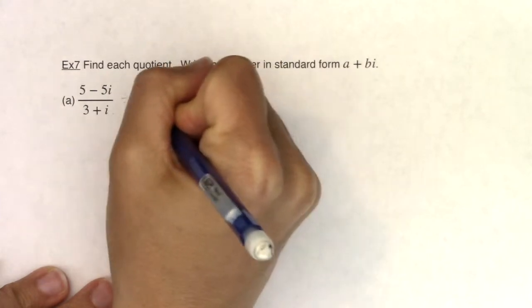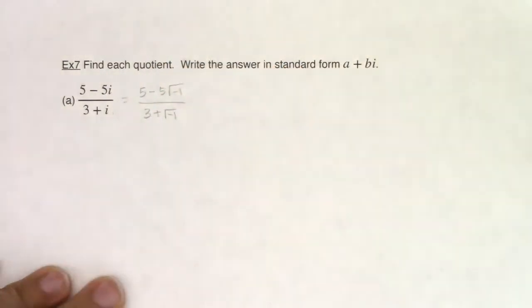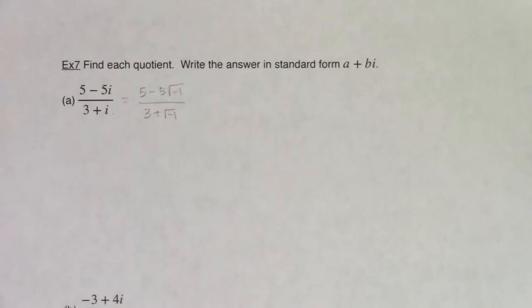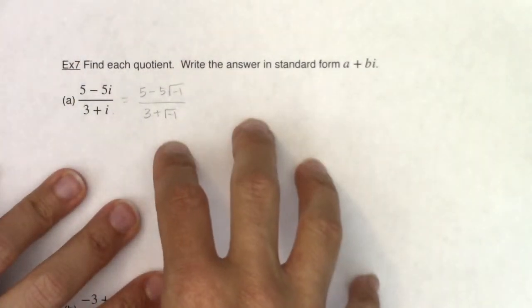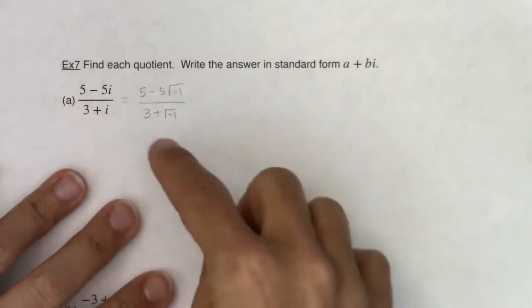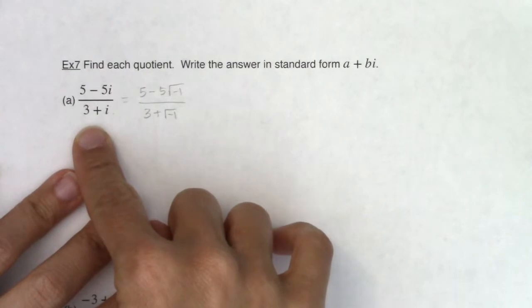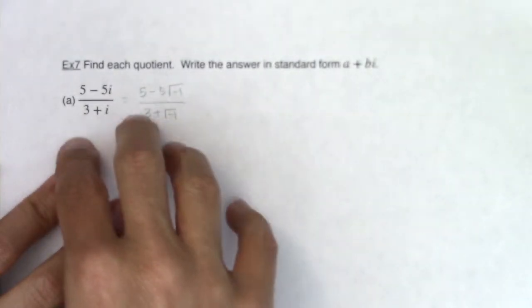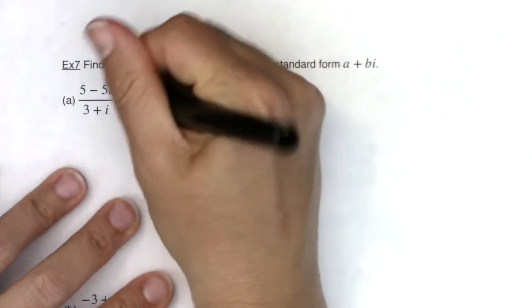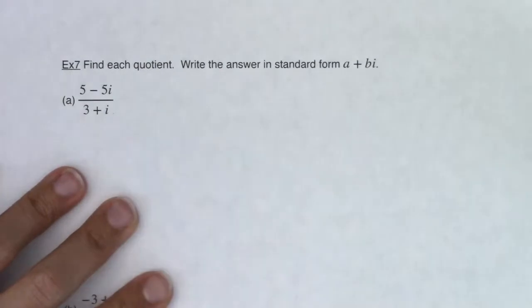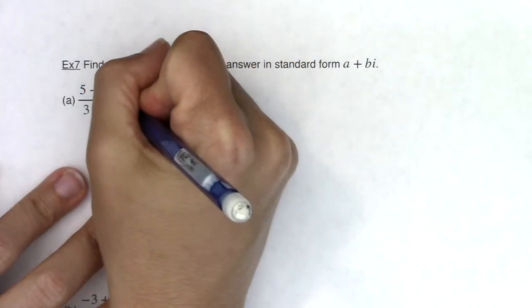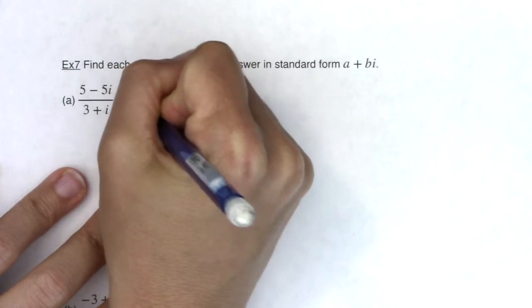It's 5 minus 5 square roots of negative 1 over 3 plus the square root of negative 1. So math folks are not into having radicals in the denominator and the question comes up, well how can I get rid of that? Well you can get rid of that by multiplying by a conjugate. We talked in example 6 about how when you multiply conjugates together, then you go from starting with complex numbers and ending with real numbers.